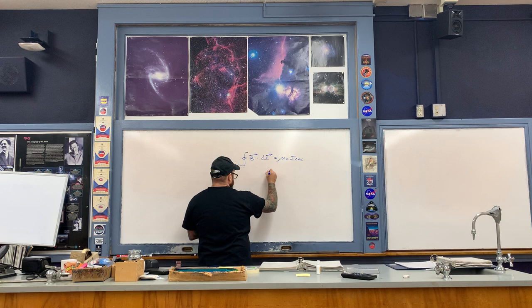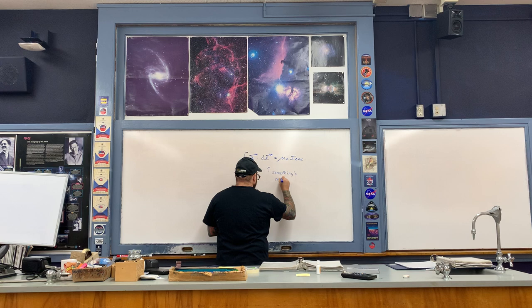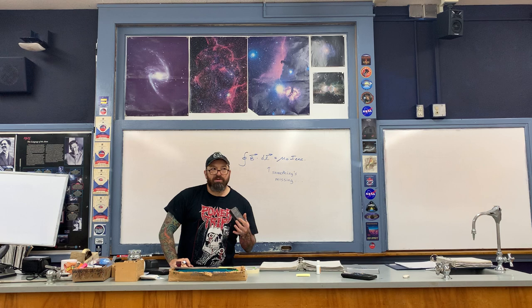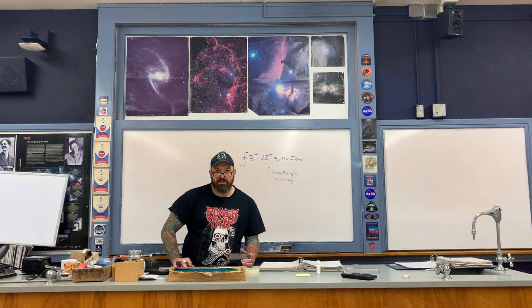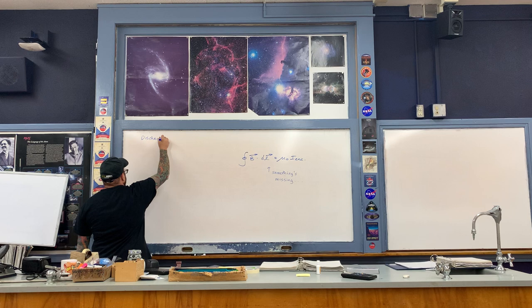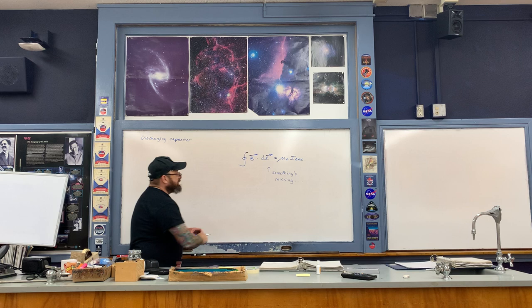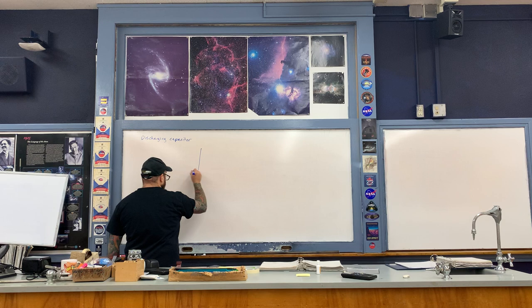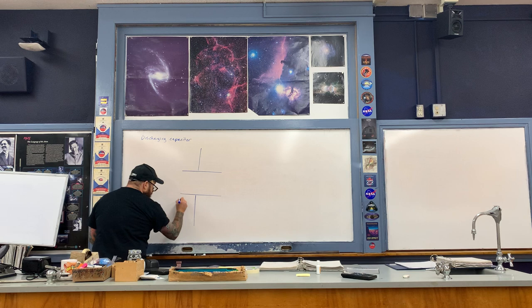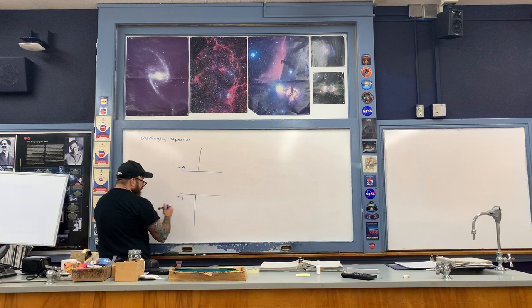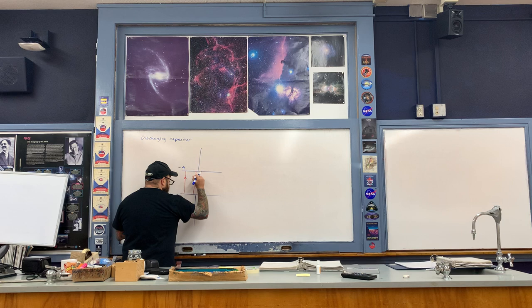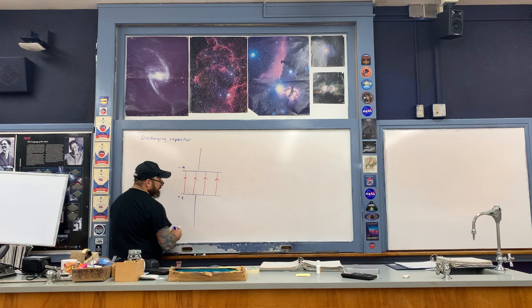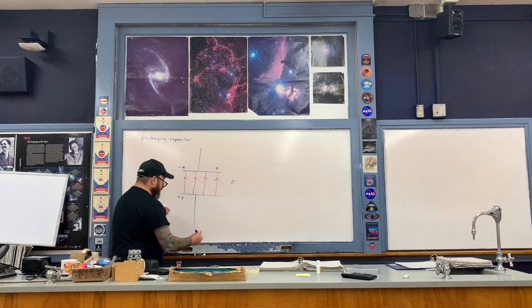Something's missing. The easiest way to see what's missing in this expression is to picture a situation involving a discharging capacitor. For a discharging capacitor, let's say that this right here is the positive side and this is the negative side. So at any instant in time, we have an electric field pointing between the plates. Recall for a parallel plate capacitor that the magnitude of the electric field is uniform, and at some instant in time that magnitude is E. The plates have an area A associated with them, and we discharge the capacitor so a current I flows.